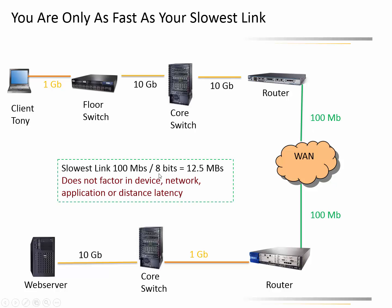That has to be put into a simple formula: 8 bits in a byte, so we divide 100 megabits by 8 and get 12.5 megabytes per second. When you measure throughput you typically copy a file, and file sizes are not denoted in bits — they're denoted in bytes. So we need to know how many bytes we're dealing with, and that is just a reference number.